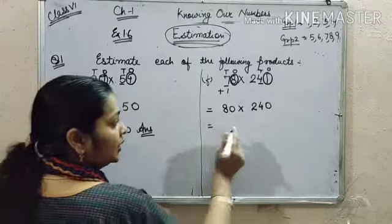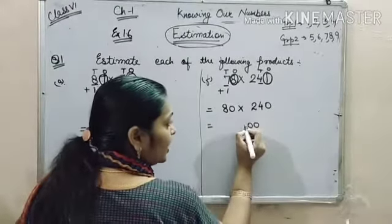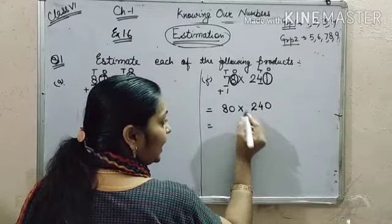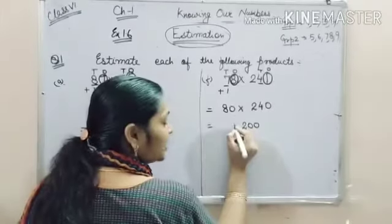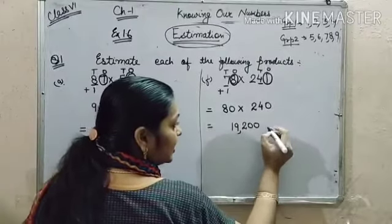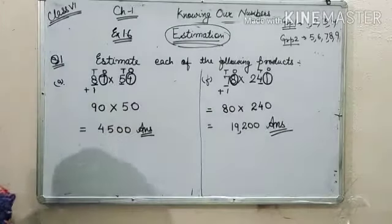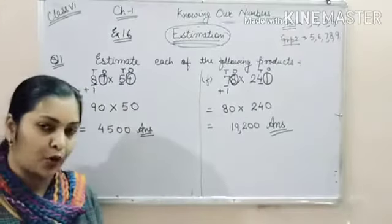Now multiply both the numbers. 2 zeros are there. 8 times 4 is 32, 3 carry. 8 times 2 is 16, 16 plus 3 is 19. So our answer is 19,200. That solved our problem.